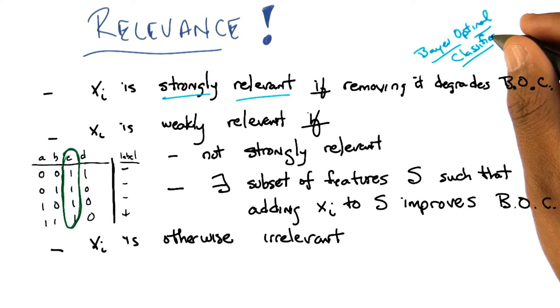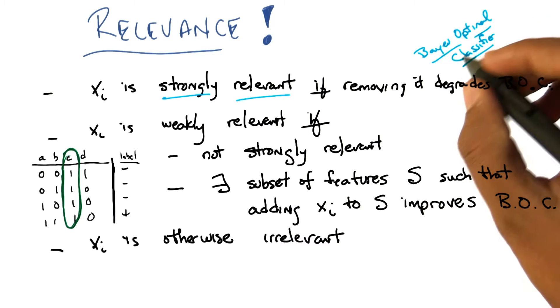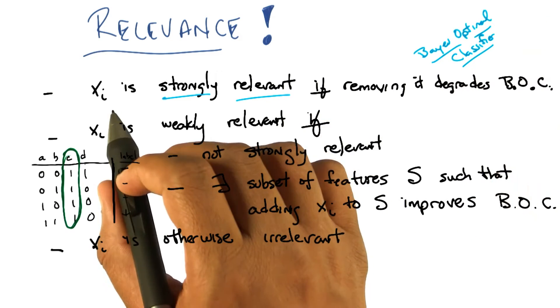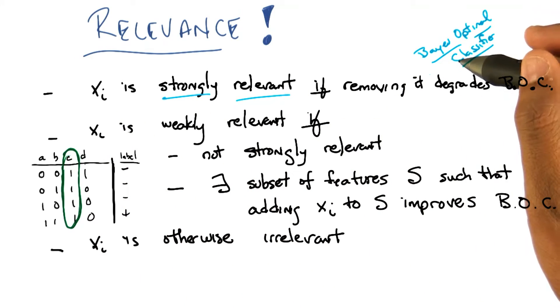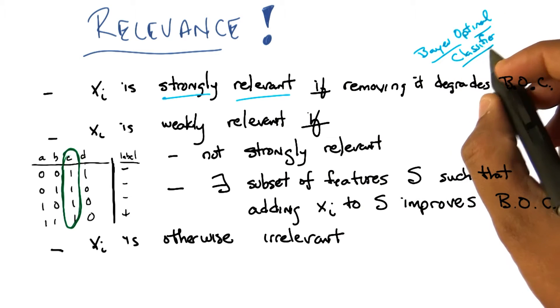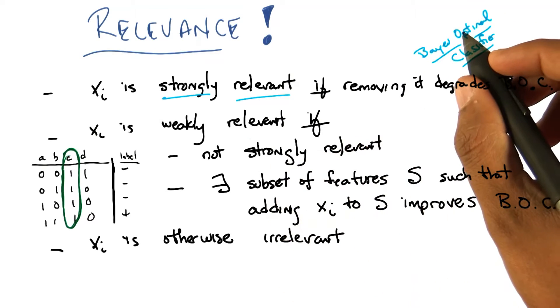Yeah, I mean, so we need a notion of priors and stuff to be able to define strongly relevant? No, it really just says that there is the Bayes Optimal Classifier, which is to say the best that you could do. That x of i is strongly relevant in the case when if you didn't have that feature, you couldn't do as well as the Bayes Optimal Classifier that had access to all of the features.